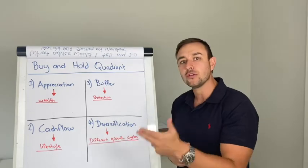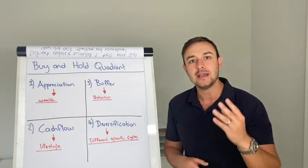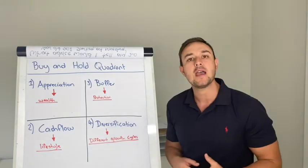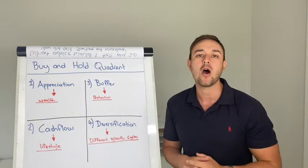This is what I call the buy and hold quadrant. You need to abide by those rules. All four of these to be able to build a successful buy and hold portfolio.